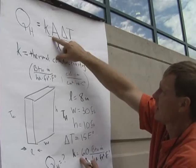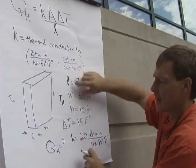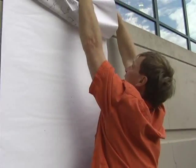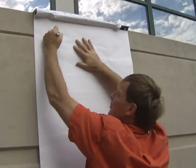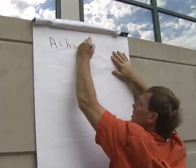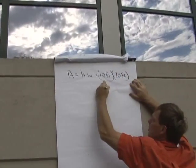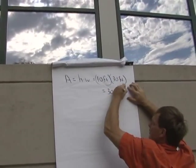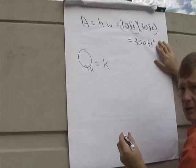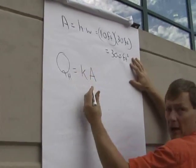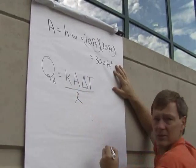So let's put these numbers in. I've got thermal conductivity, I can calculate the area, I've got the temperature difference, and I've got the thickness. The area is height times width: 10 feet times 30 feet equals 300 feet squared. The heat transfer rate is thermal conductivity times area times temperature difference, divided by thickness.